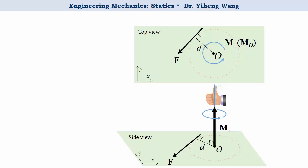So in the scalar form, M equals to F times D, and in the vector form, the moment is determined through a vector cross product that M equals to R cross F, with R being the position vector from point O to F.